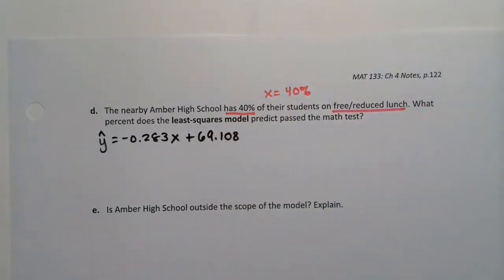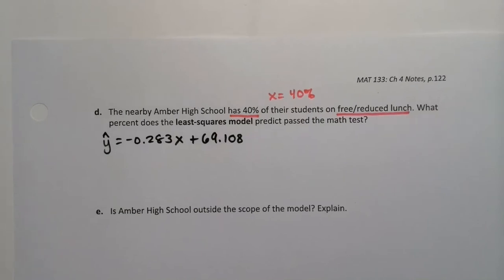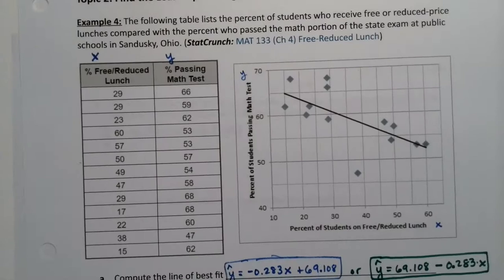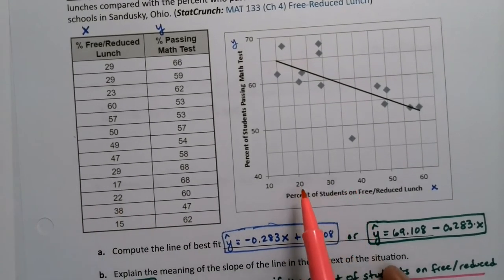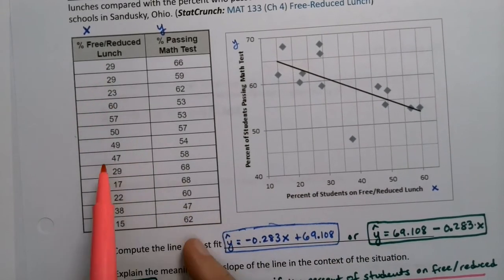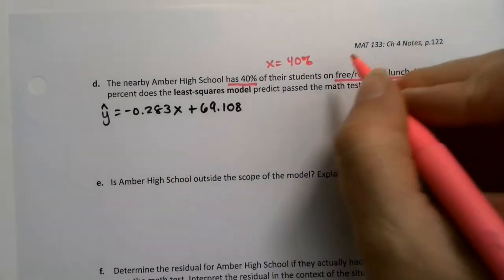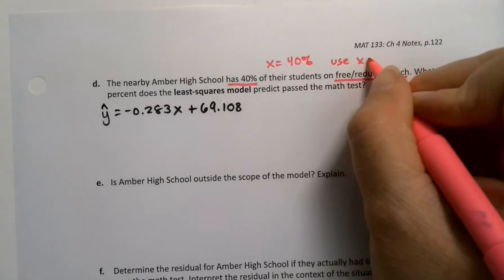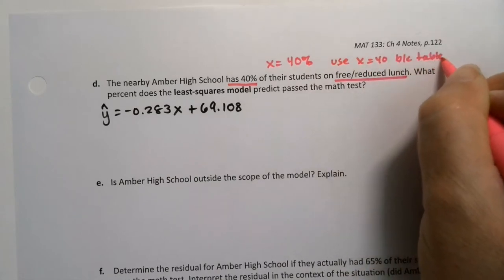Now this gets a little tricky. Do you use 40% to use 40 or do you use 0.4? And for that you should go back to the table or the graph. You can see on the graph it's using percent, so it's using 10, 20, 30, 40. And same thing over here on the table, you can see it's using whole numbers.